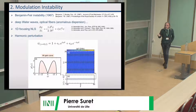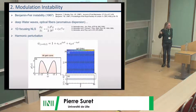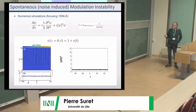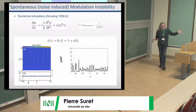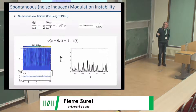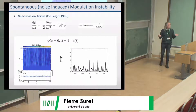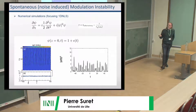Modulation instability — sometimes called sideband instability — means that a plane wave solution (homogeneous with constant amplitude) will exhibit exponential growth of sinusoidal perturbations if the perturbation frequency falls within the modulation instability gain band. The spontaneous version occurs when you launch a monochromatic wave: you always have small noise initially, and all frequencies within the MI gain grow exponentially, leading to a complex spatiotemporal dynamics.